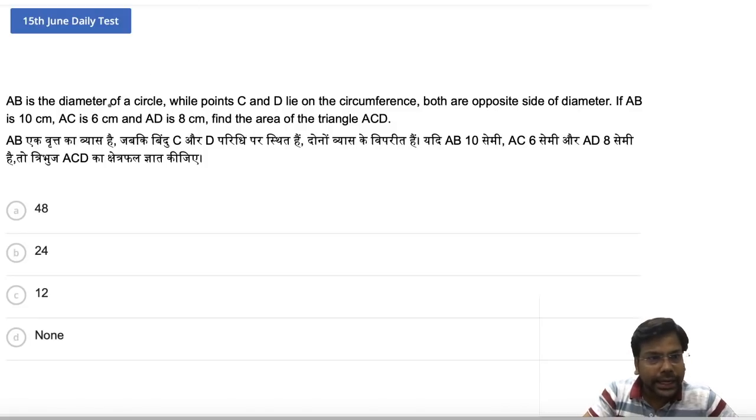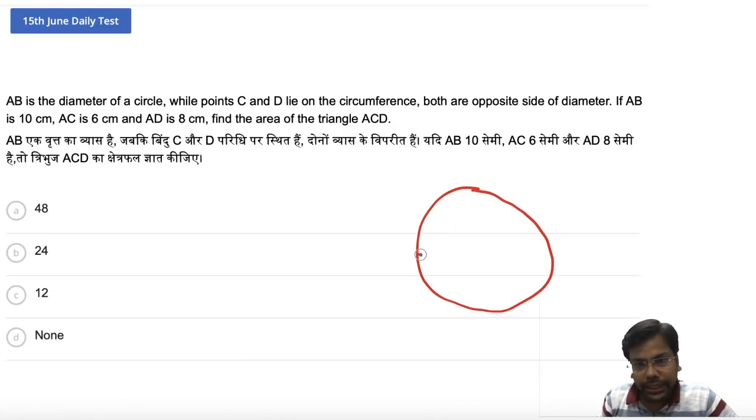The question is quite easy. AB is the diameter of a circle. So we need a circle in which AB is the diameter. And I am writing O as a center. Because if it is a diameter, there should be a center denoted. Otherwise it will be a chord.